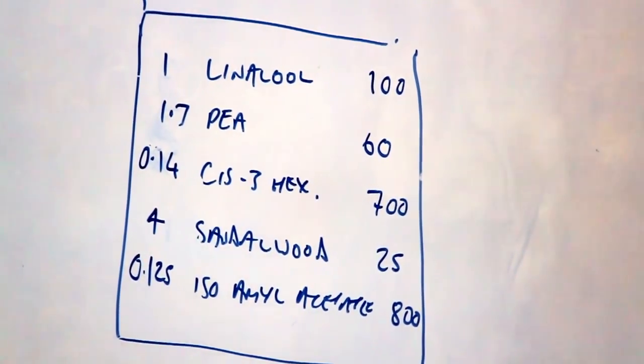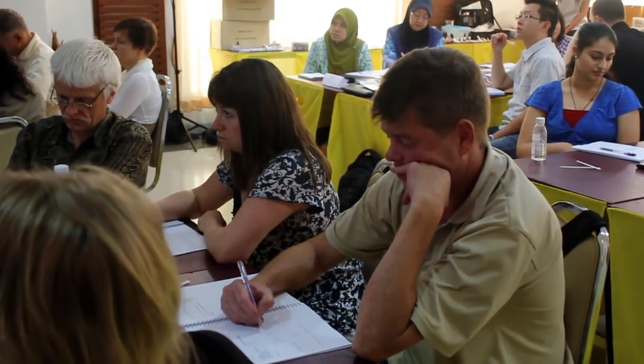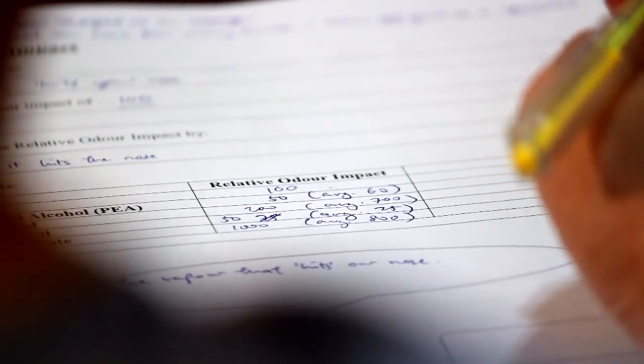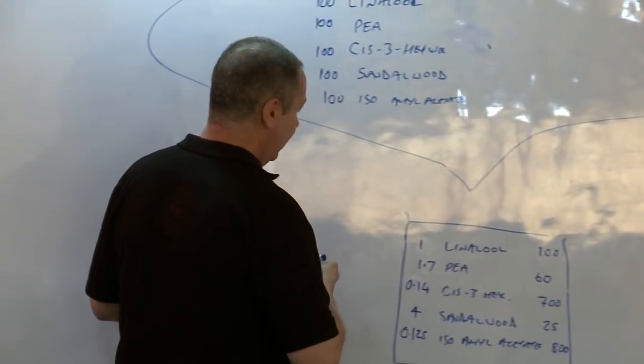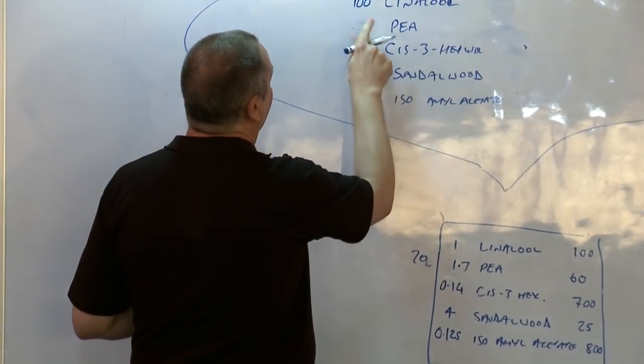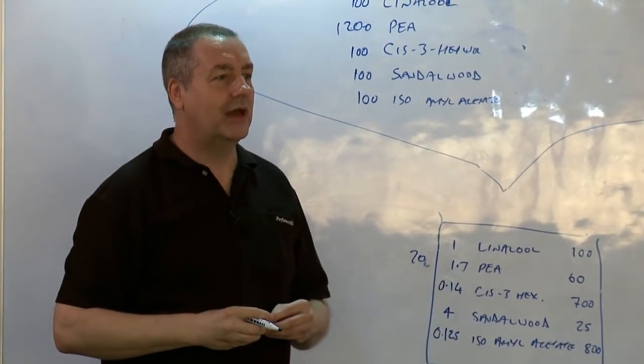So if I only had these five materials and I wanted to make a rose perfume, what would I do? Which material was rosy? PEA. So I'd need an awful lot of PEA. Maybe I want 20 of PEA, so that I get 1,200 here. Now I have a rose perfume with a little bit of fruitiness and a sandalwood bottom note.